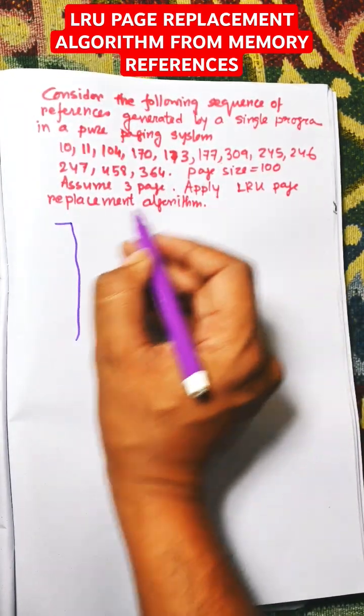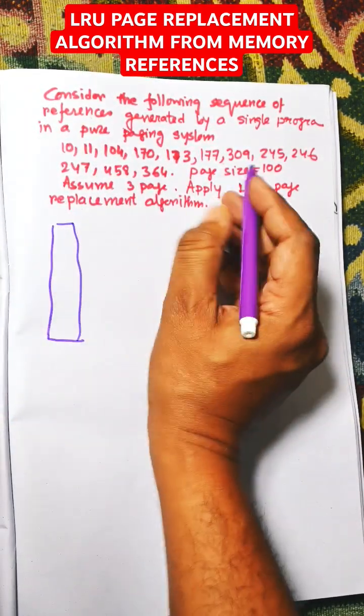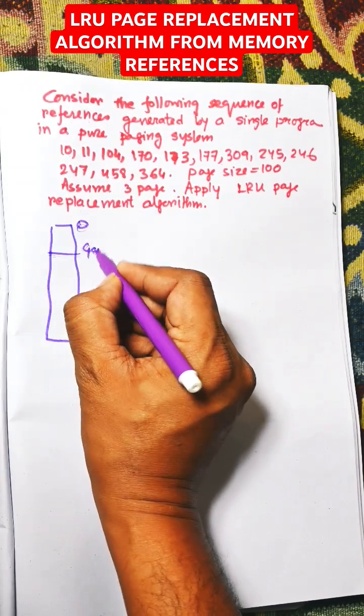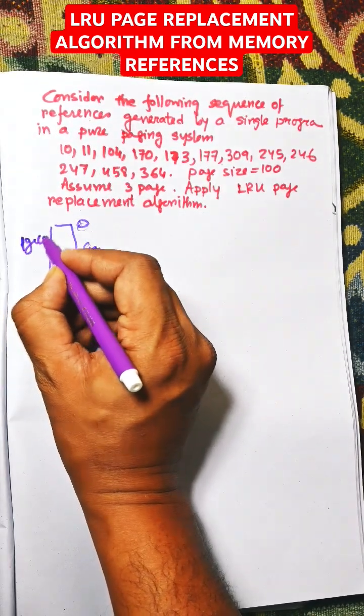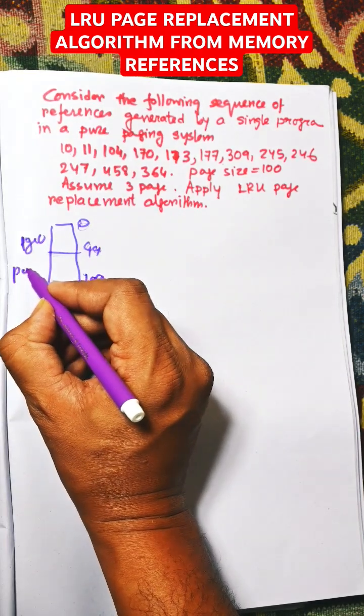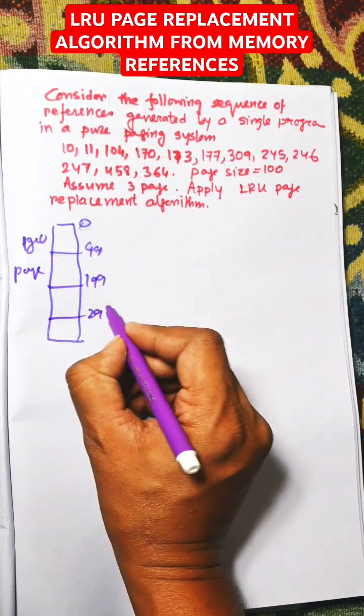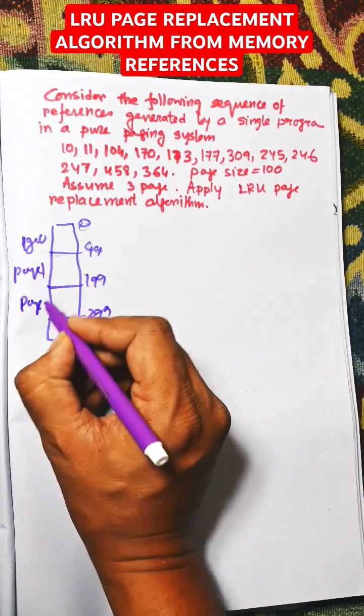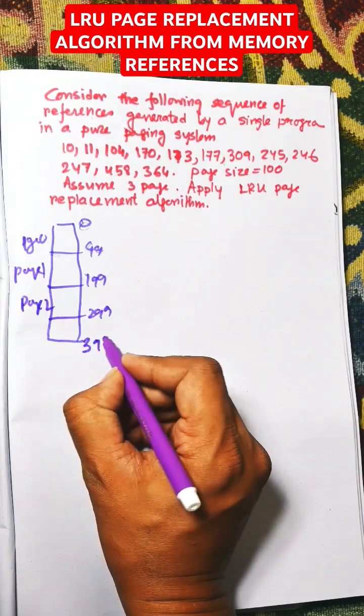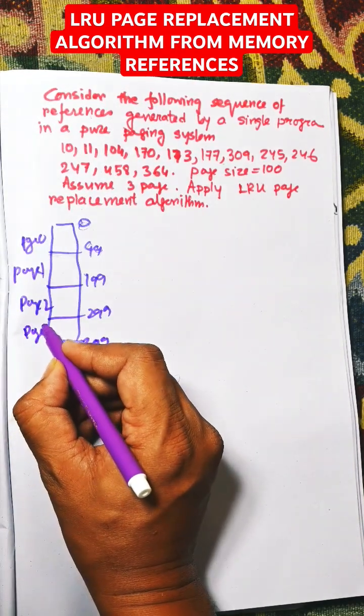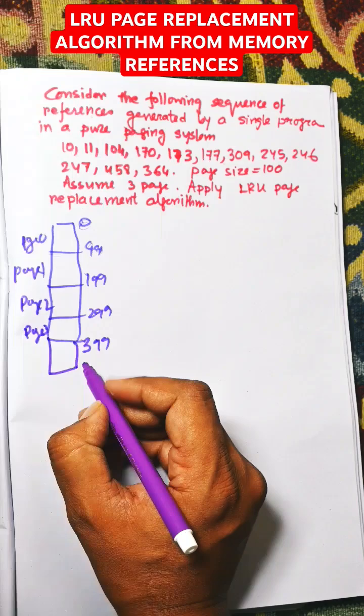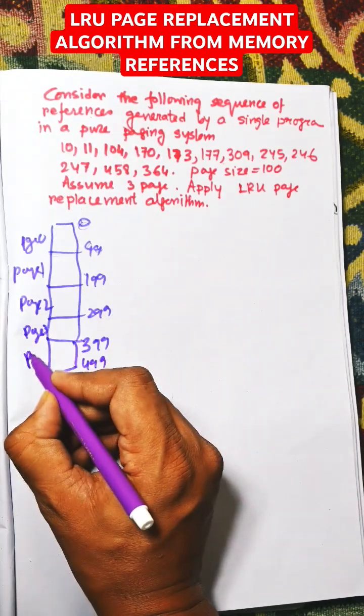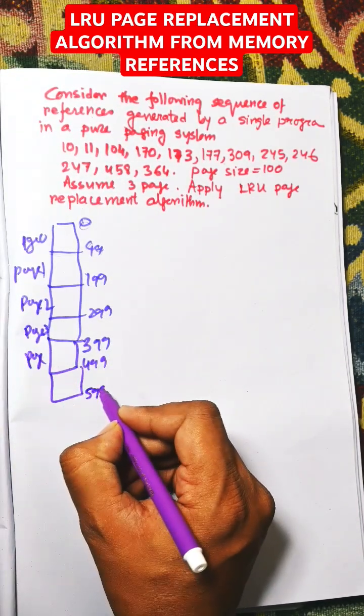First of all, here the page size is 100. Mean 0 to 99 is page 0, 100 to 199 is page 1, 200 to 299 is page 2, 300 to 399 is page 3, 400 to 499 is page 4, 500 to 599 is page 5.